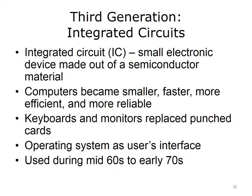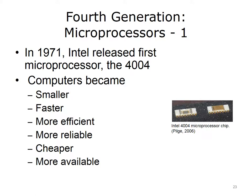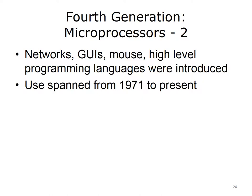Fourth-generation computers are based on microprocessors, which are a special type of integrated circuit specifically designed for processing. Intel released its first microprocessor chip, the 4004, in 1971 for desktop calculators. The Intel 8080 was released in 1974 and had 4,500 transistors — the first general-purpose microprocessor. Because of microprocessor technology, computers further decreased in size, energy consumption, and price; they became faster, more reliable, and more available. Also in the fourth generation, networks, graphical user interfaces (GUIs), mouse devices, and high-level programming languages were introduced. Fourth-generation computers span the time period from 1971 to the present.